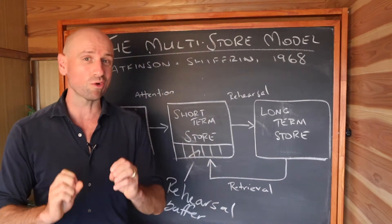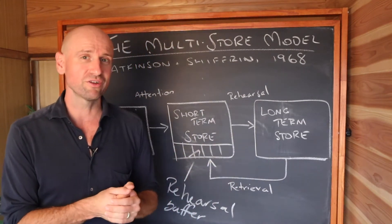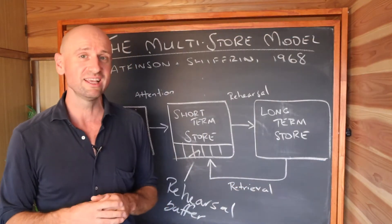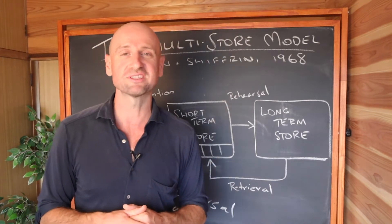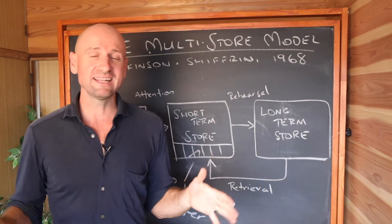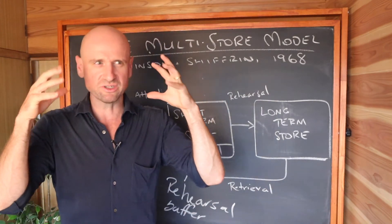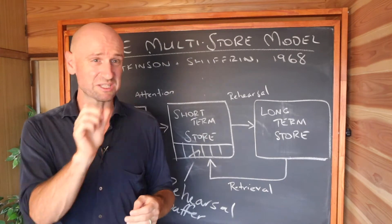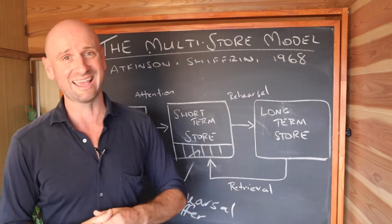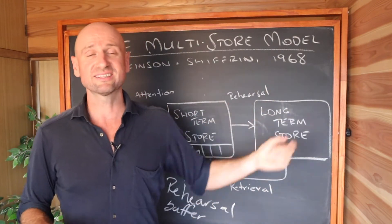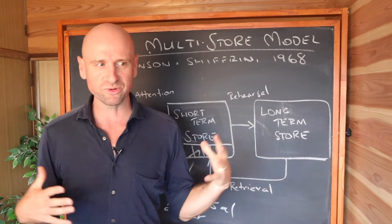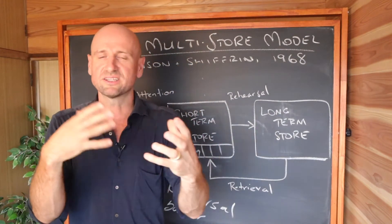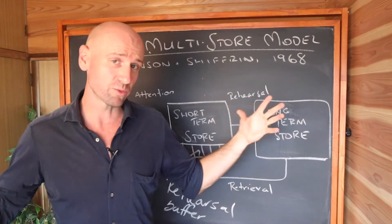The second thing you might not have known about the multi-store model is that it wasn't the first multi-store model of memory. Credit goes to Murdoch a year earlier in 1967 when he proposed his multi-store model. We could trace it back even further to William James, the father of American psychology, in the late 1800s, who was proposing the idea of memory as separate stores. It's a long-standing debate: is our memory one unitary structure or divided into separate components? The cognitive revolution of the 1950s and 60s was a pool of ideas and findings from cognitive science and experimental studies on memory, and what Atkinson and Shiffrin did was combine them into one cohesive framework.